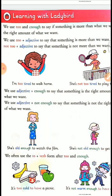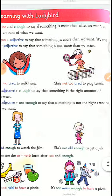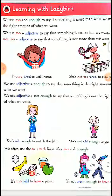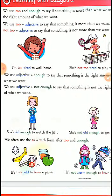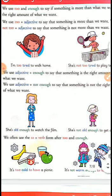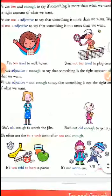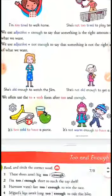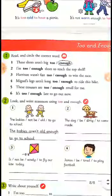For example: she is old enough to watch the film. She is not old enough to get a job. After 'too' we use T-double-O. The first example: it's too cold to have a picnic. The second: it's not warm enough to have a picnic.